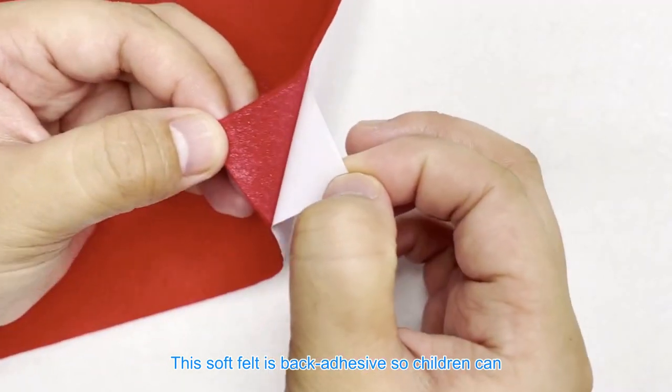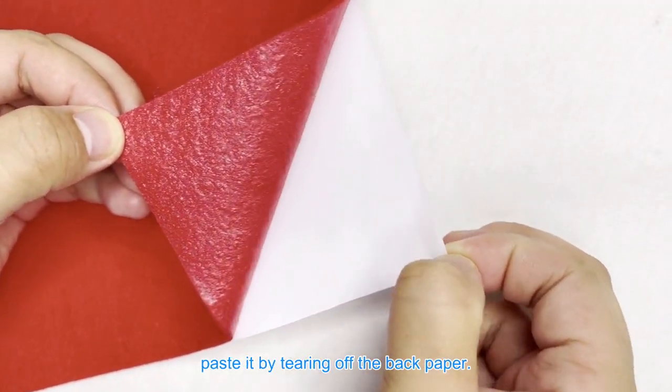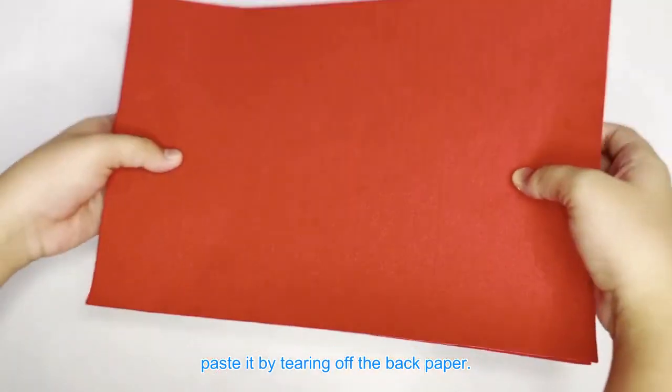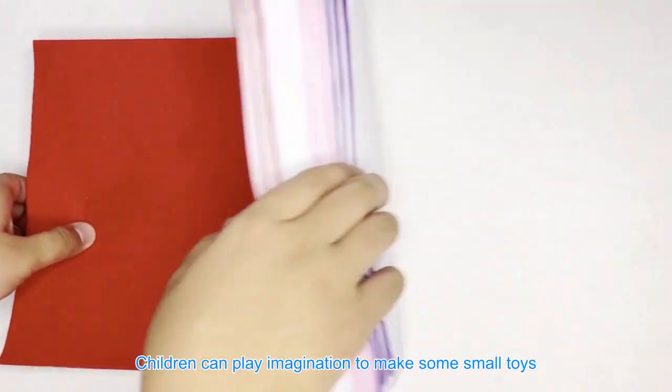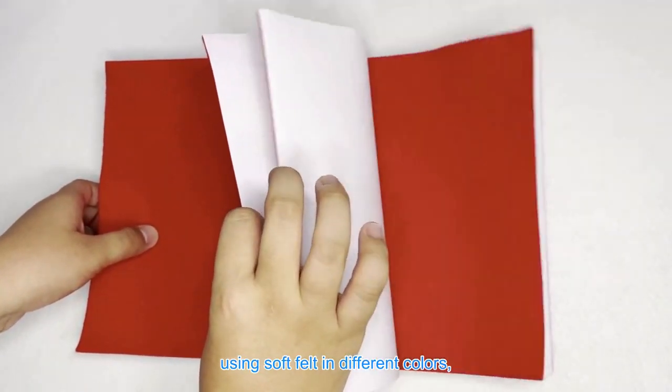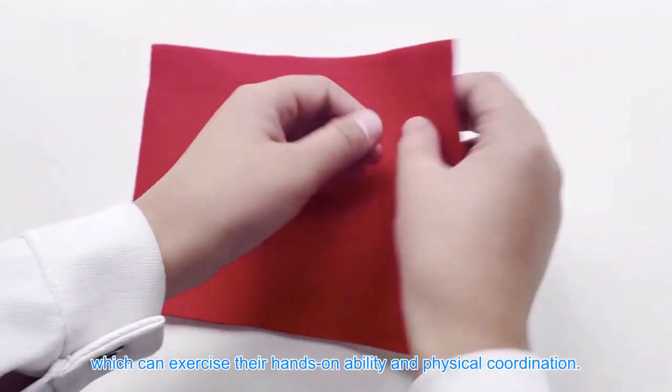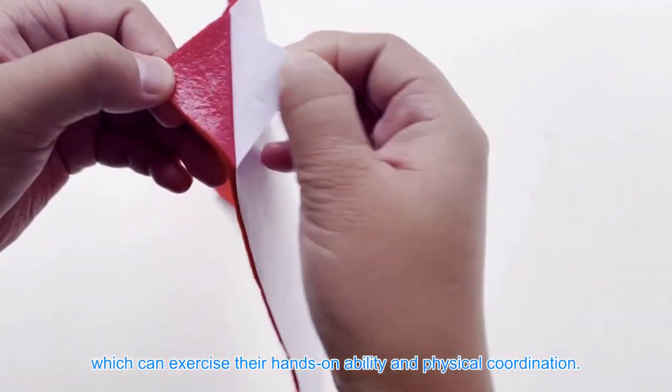This soft felt is back adhesive, so children can paste it by tearing off the back paper. Children can play and use imagination to make some small toys using soft felt in different colors, which can exercise their hands-on ability and physical coordination.